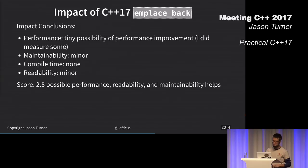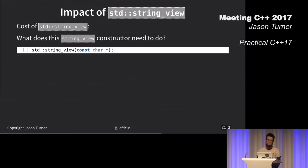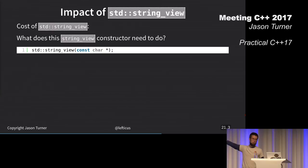Next up on my list, I have string view. The main impact of string view is in avoiding temporary strings, but it has a cost. We already mentioned this, but let's really quick clarify what does the string view constructor need to do?